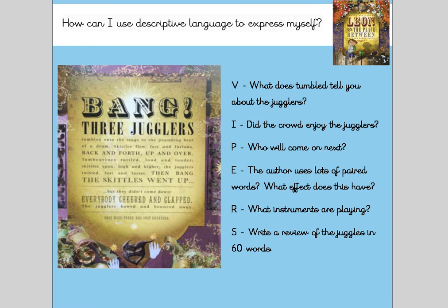So what we're going to do today is focus on different parts of the story and answer some questions. For our example, we're going to use the page about the jugglers. A vocabulary question example might be: what does "tumbled" tell you about the jugglers? You look through the text and find the word tumbled. We then need to think: what word class is tumbled? If you tumble — hopefully we remember it's a verb, it's a doing word — because that's what the jugglers were doing. If we tumble, we tend to fool around, so tumbling tells us the jugglers are probably being a little bit silly, falling over each other to get onto the stage.